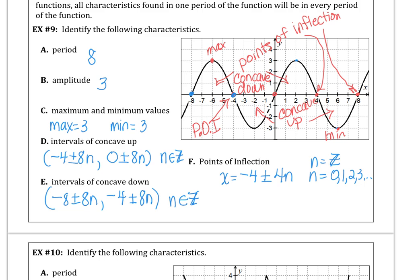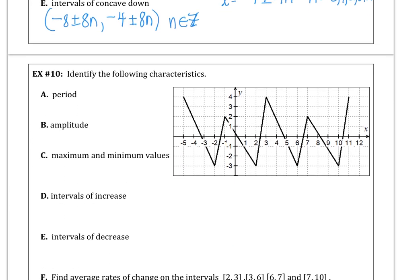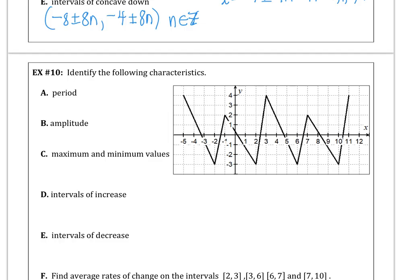Example 10. Can you identify the following characteristics? The period. From this high point and go over to this high point, it looks like it's 8 again. The amplitude goes from 4 to negative 3, so 4 minus negative 3 is 7, divided by 2, that's 3 and a half. Maximum value is at 4, that's our upper bound. Minimum value is negative 3, that's our lower bound.